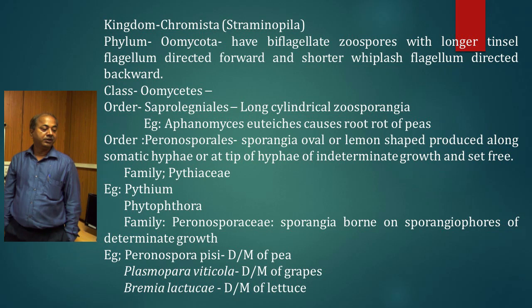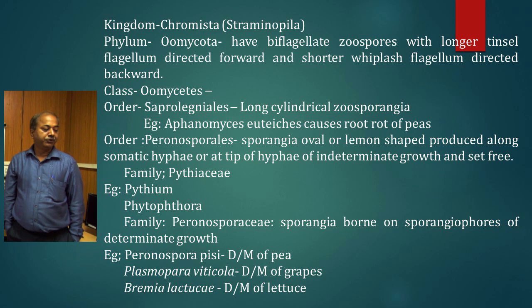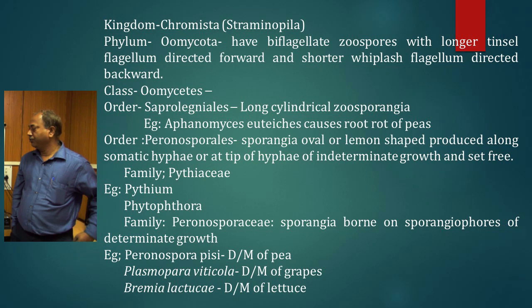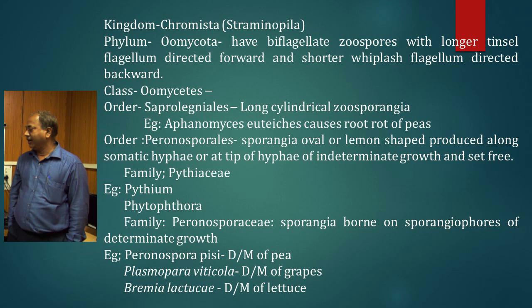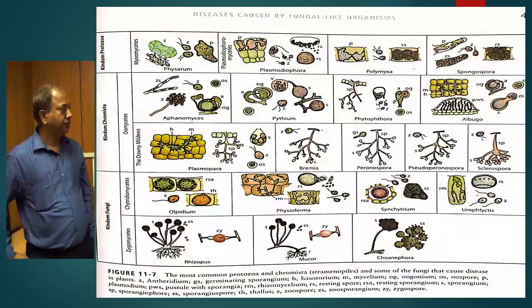In family Peronosporaceae, the sporangia are borne on sporangiophores of determinate growth, while in Peronosporales the sporangia were of indeterminate growth. Peronosporaceae is the downy mildew family, with genera Peronospora, Plasmopara, and Bremia. Downy mildew of pea is caused by Peronospora pisi, Plasmopara viticola causes downy mildew of grapes, and Bremia lactucae causes downy mildew of lettuce.